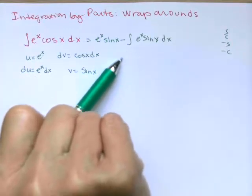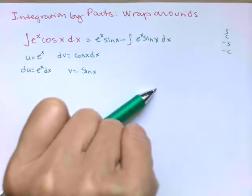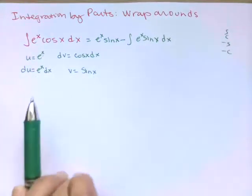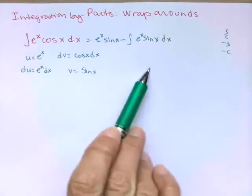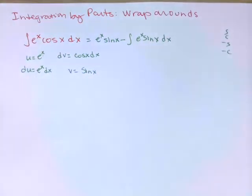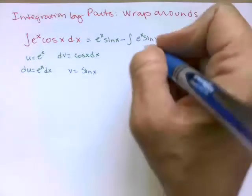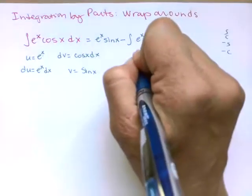Here's what we're going to do: we're going to do the integration by parts again, and whatever you chose for u on your first one, you want to choose the same thing on your next one. So we'll grab a new color and do integration by parts again.